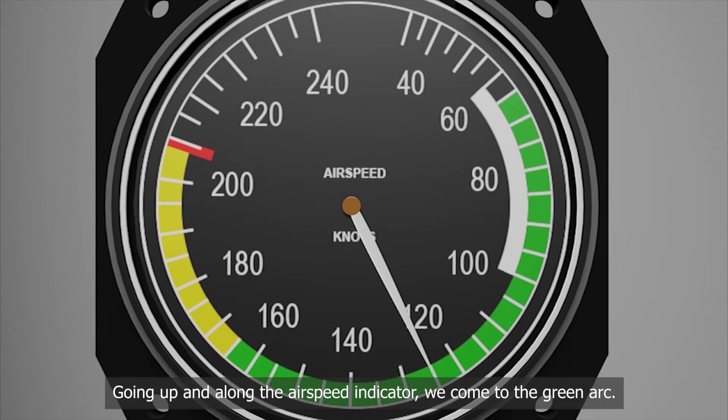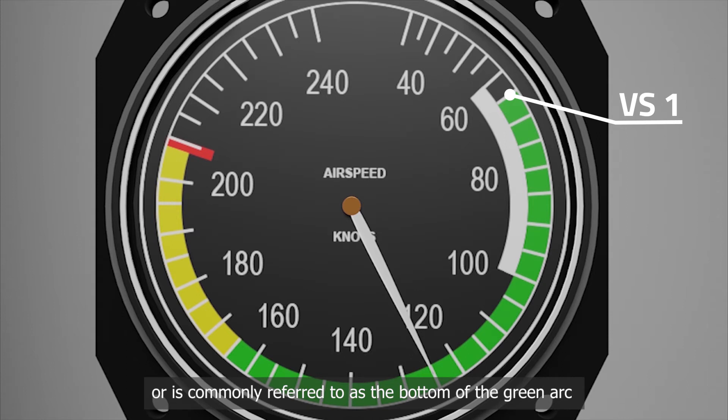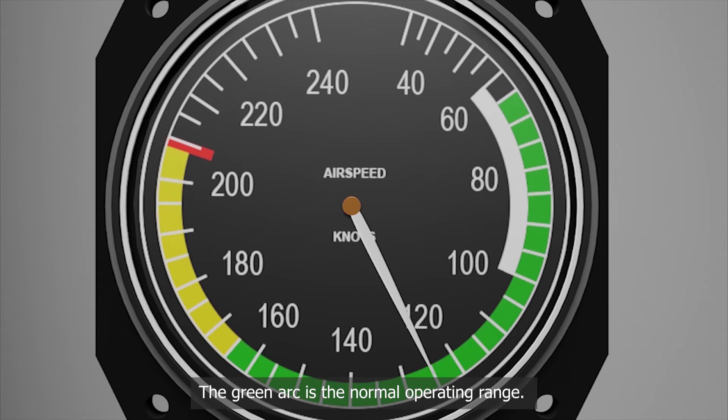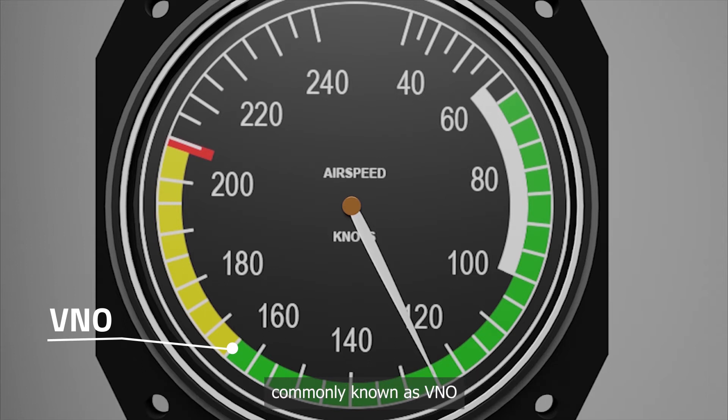VS1 is where the white arc meets the green arc or is commonly referred to as the bottom of the green arc or the power off stalling speed with the gear and flaps up. The green arc is the normal operating range. The very top of the green arc is the maximum structural cruising speed, commonly known as VNO.